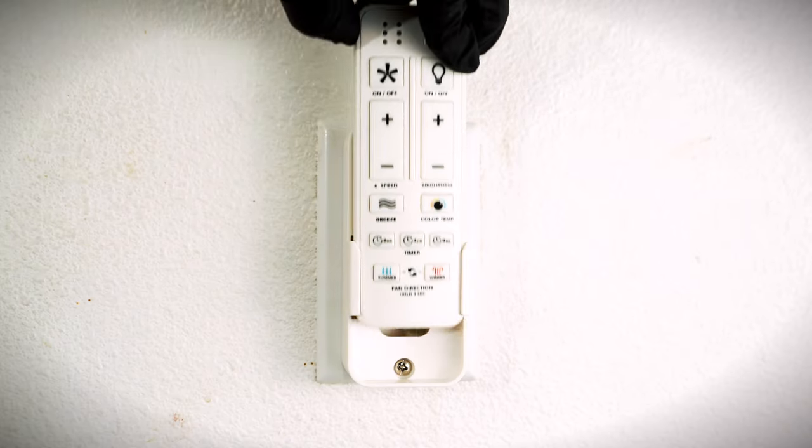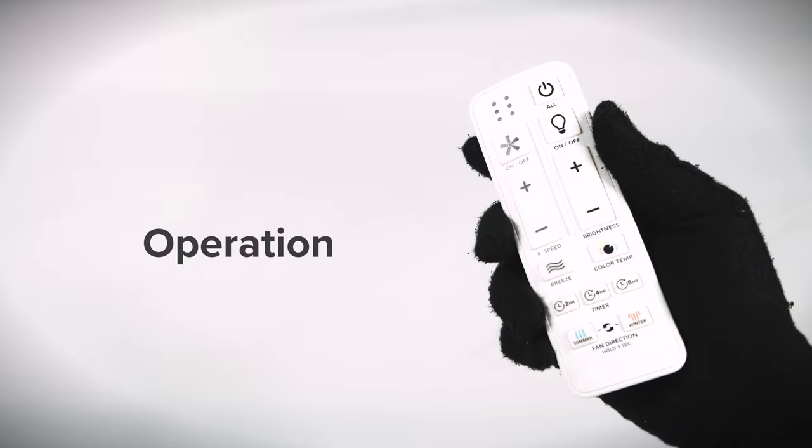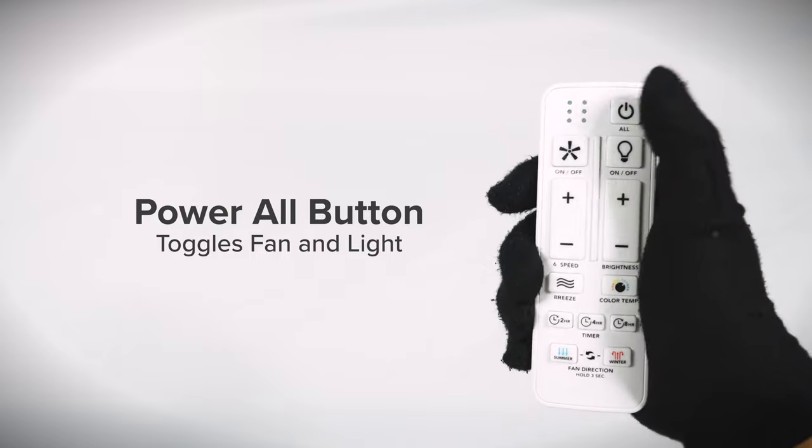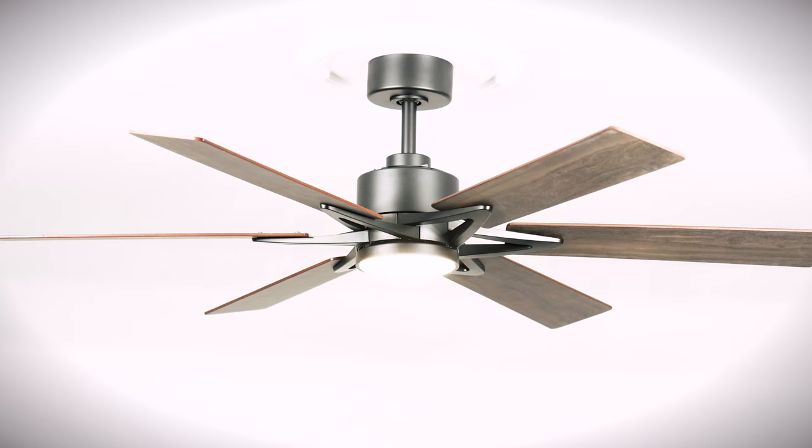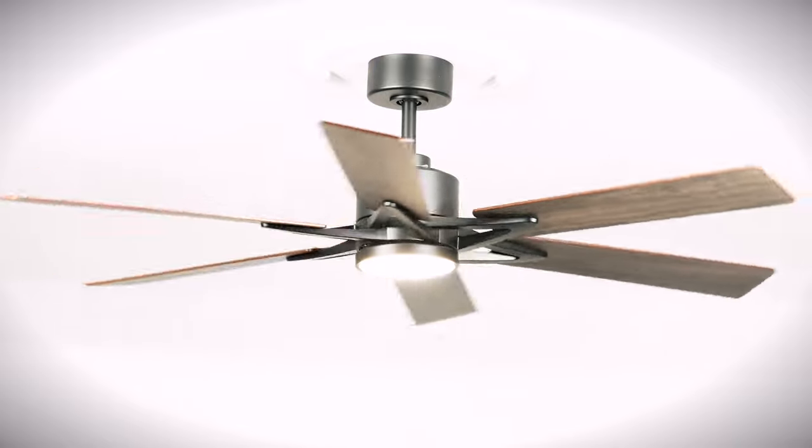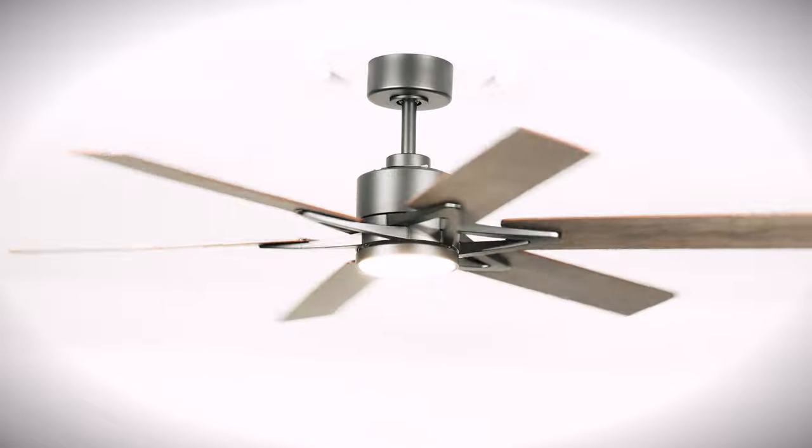With the remote properly set up, you can now operate the fan. Press the power all button to toggle both the fan and the light at the same time. Every time the fan starts up, the blades will move back and forth for a few moments as part of a self calibration process that ensures a balanced and energy efficient operation.